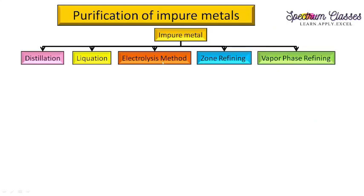Purification of impure metals can be done by various methods. The ones covered in the Class 12 syllabus are: distillation, liquation, electrolysis, zone refining, and vapor phase refining. We are going to discuss these different methods one by one.